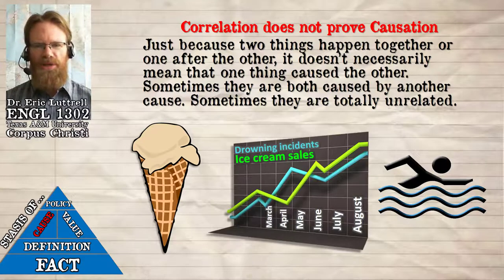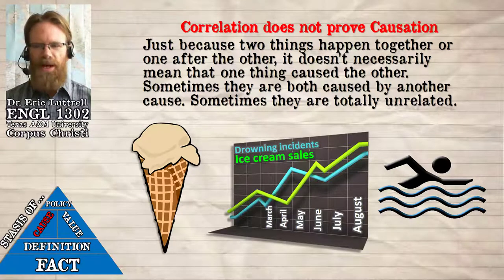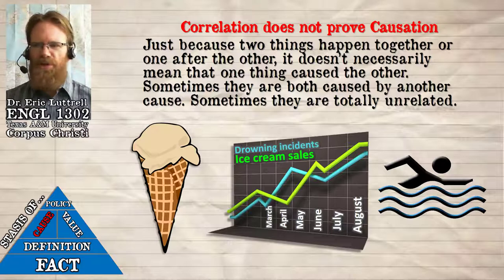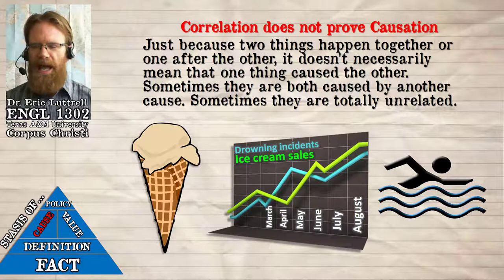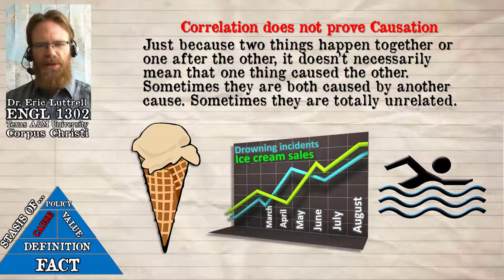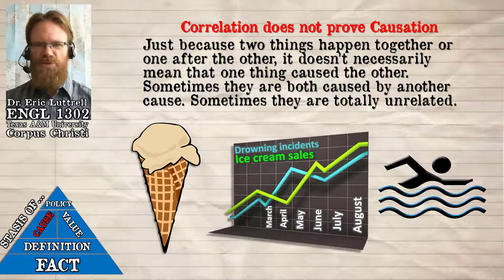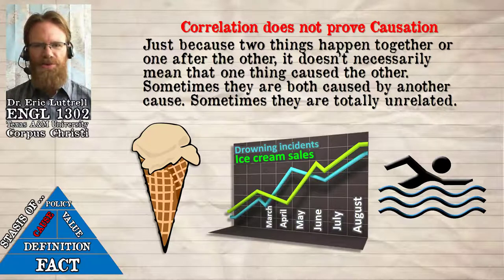That leads us to jump to certain conclusions about cause and effect. One of the most frequent problems we run into is mistaking correlation for causation. Imagine you're looking at data for two different phenomena — the incidence of drowning and ice cream sales. You see that at certain points of the year drowning goes up, and at the same time of year ice cream sales go up. When ice cream sales go down, drowning goes down too. It seems like there's a causal relationship: ice cream causes people to drown.